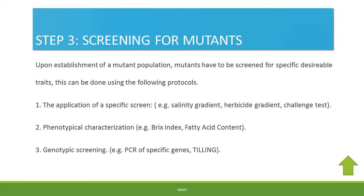Upon establishment of a mutant population, mutants have to be screened for specific traits. This can be done by the application of a specific screen. For instance, if you are screening for salt-tolerant varieties of rice, you may apply a salinity gradient. If you are screening for herbicide tolerance, you may apply a herbicide gradient. You may also incorporate challenge tests involving insects, bacteria, or other pathogens. Phenotypical characterization can be done using the BRIX index in the case of fruits or the fatty acid content in the case of oilseeds.